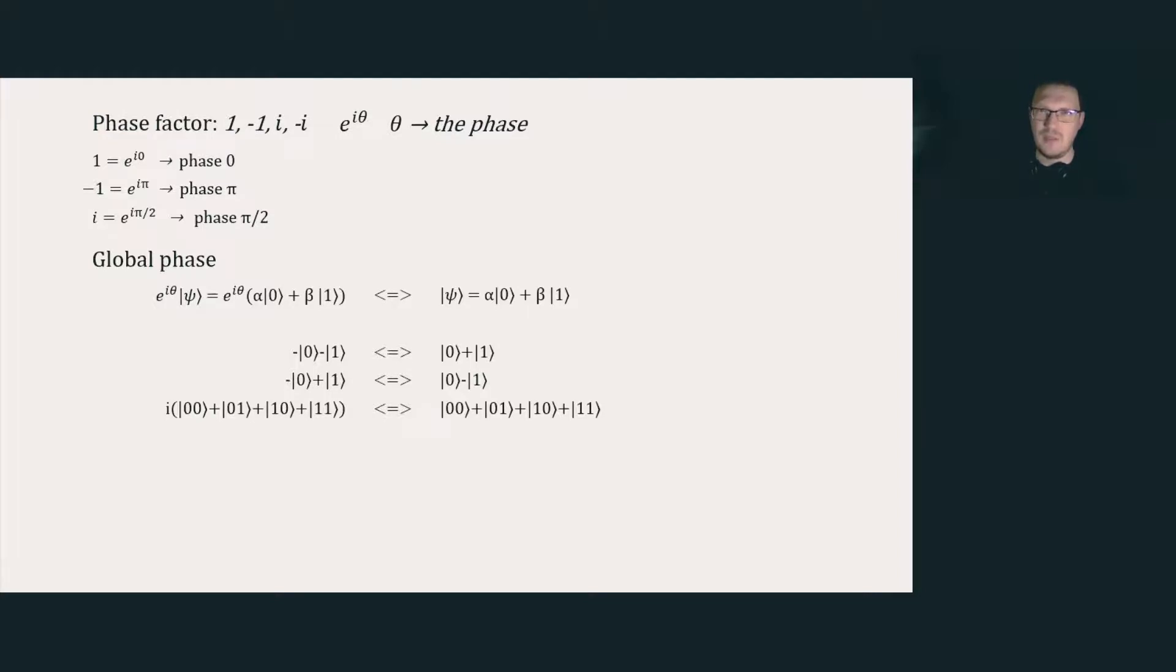For example, the state minus 0, minus 1 is equivalent to the state 0, plus 1, because the minus sign can be factored out as a global phase and ignored.